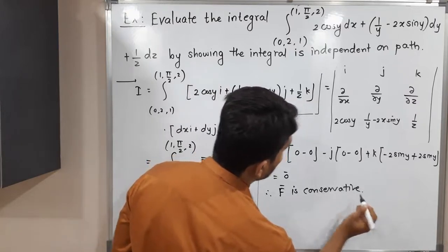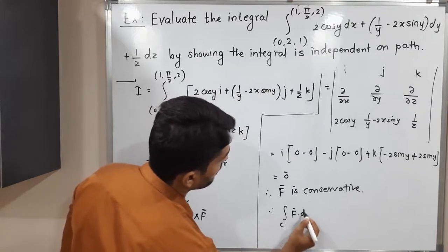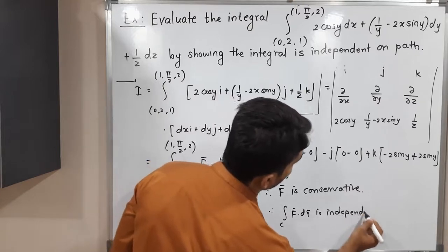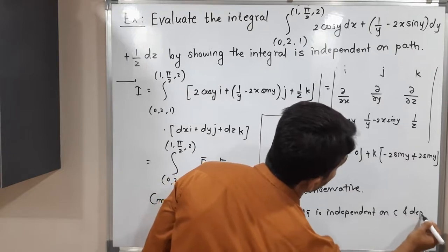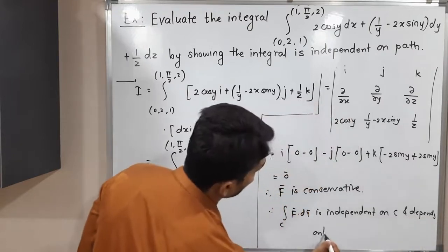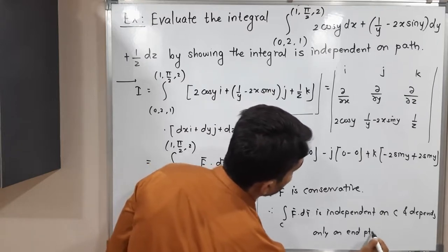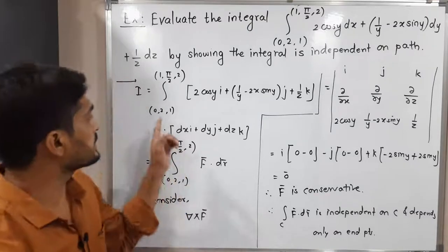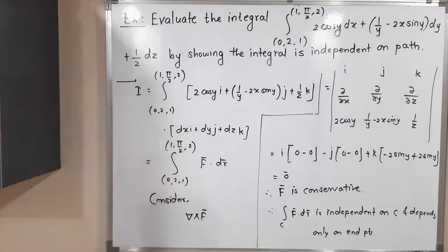Therefore, the integral of A-bar dot dr-bar over C is independent of C and depends only on the end points — it depends only on the starting point and ending point. After that, we will find the potential function of F-bar.